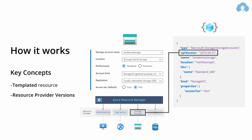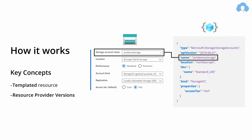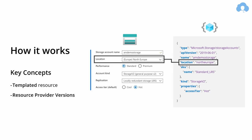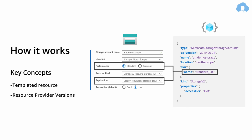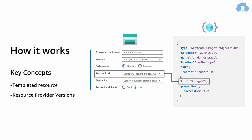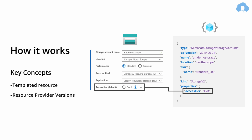Every service you deploy needs to have a name — it's a standard property that always needs to be filled. Also, location: the data center where this service will be deployed. Beyond this point, every service in Azure has its own unique properties, so you always need to check what properties to supply for each service. In this case, the SKU name is a combination of performance and replication — standard locally redundant storage. You also have account kind and access tier. As you can see, it's just a few properties and you're ready to go.